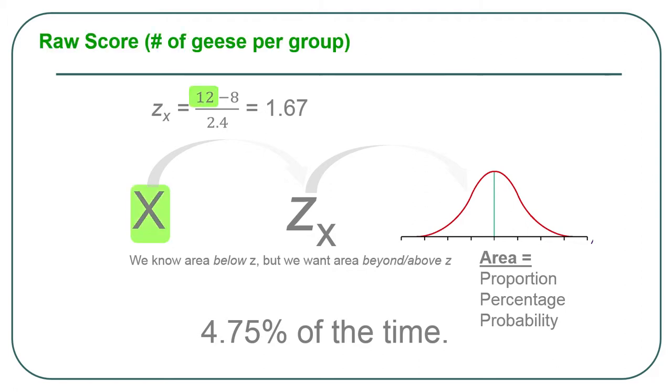So let's remind ourselves of what some of the stuff is here. This is the raw score, the number of geese per group. Also 8 is a kind of raw score. It's in the scale of raw scores. 2.4 is in the scale of the raw scores. The mean and the standard deviation are always in the same scale as the raw scores.